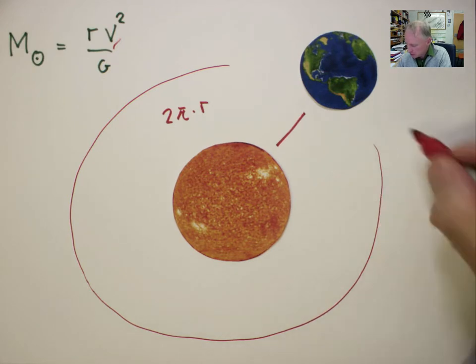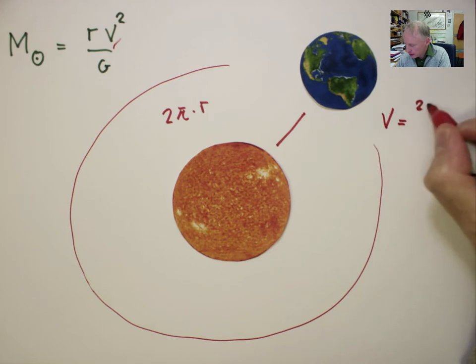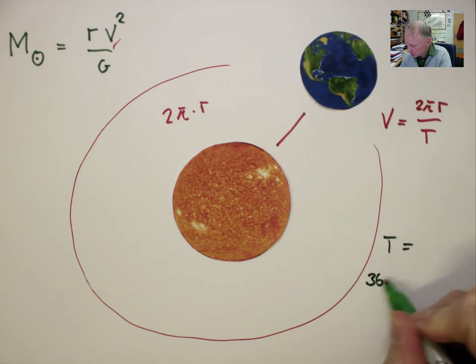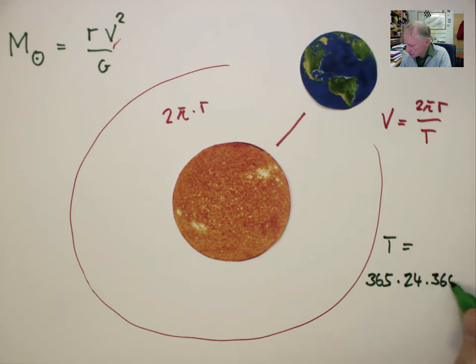So we can write V is equal to 2 pi r divided by T. The period T, one year, is equal to 365 days, times 24 hours, times 3600 seconds.